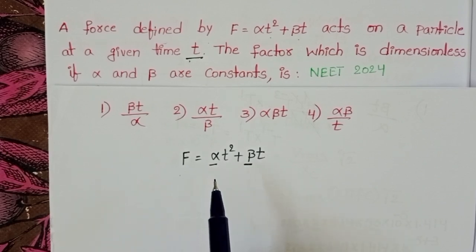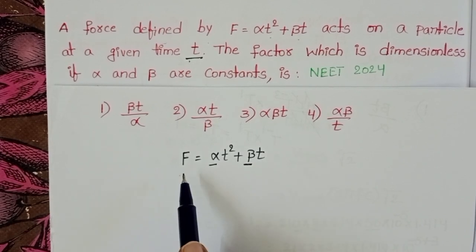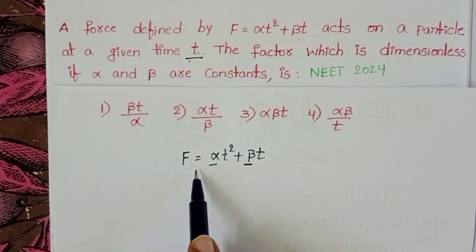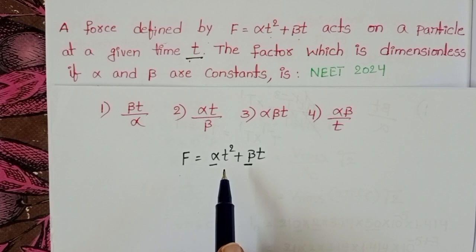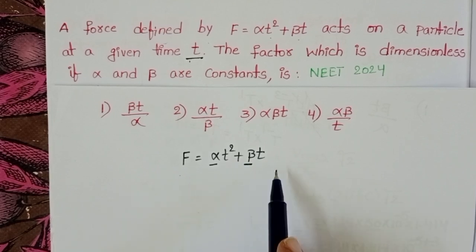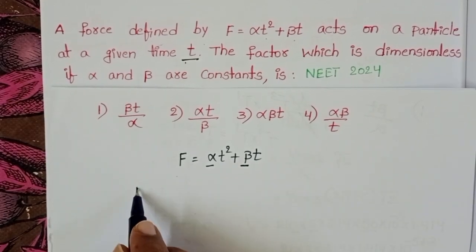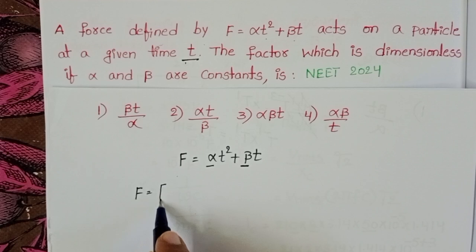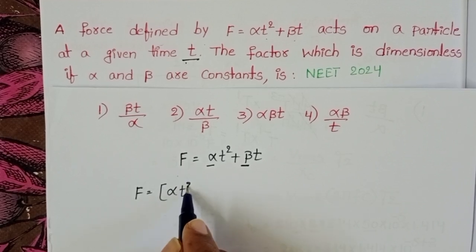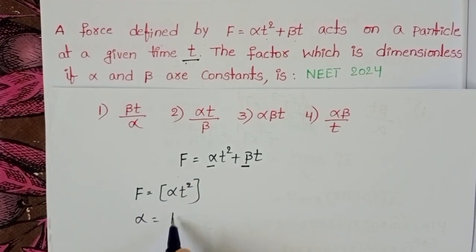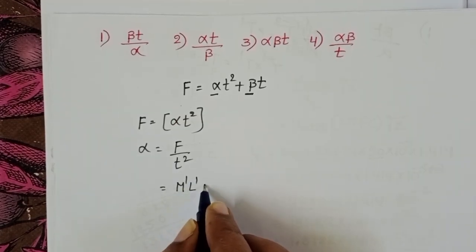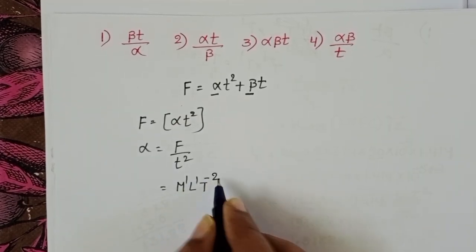According to the principle of homogeneity, the dimensions of the quantity on the LHS side equals the dimensions of each and every term on the RHS side. So dimensions of force equals dimensions of alpha t squared. From this, alpha equals F divided by t squared, giving dimensions M power 1, L power 1, T power minus 2.